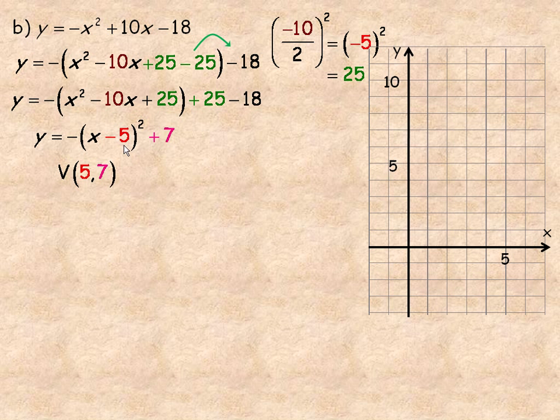So the vertex of this parabola would be at (5, 7). Remember opposite of the x coordinate, same as the y, so 5, 7. And it opens down because the coefficient in front here, the negative 1, is less than 0, and so it opens down. So we plot our vertex at 5, 7, and of course 5, 7 would be right up here.